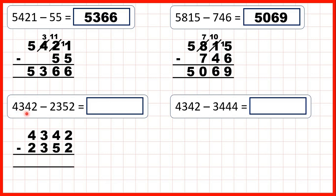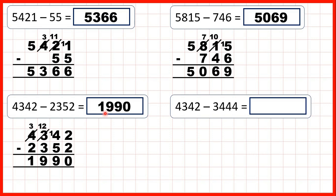Now we have 4,342 minus 2,352. Starting on the right, 2 minus 2 is 0. Then we have 4 minus 5. 5 is larger than 4, so we go to the left, 1 less, 1 in front — we've exchanged one of our hundreds for 10 more tens, giving us 14 tens. So 14 take away 5 is 9. Then on to our hundreds: we have 2 minus 3, so we need to go to the left, 1 less, 1 in front — exchange one of our thousands for 10 more hundreds. That gives us 12 hundreds, and 12 minus 3 is 9, 3 minus 2 is 1, so we get 1,990.